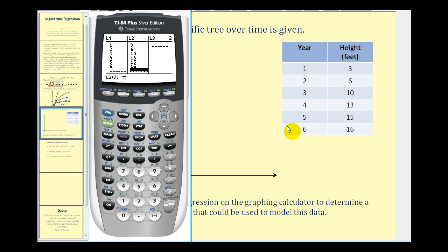Next, we have to set up the axes to show these data values. Press the window key. The values for x go from 1 to 6, so we'll set the x minimum to negative 1 and the x max to 7, scale it by ones. The y values go from 3 to 16. I like to see the origin, so I'm going to have the y minimum be negative 5 and a maximum of 20, and we'll scale this by fives.